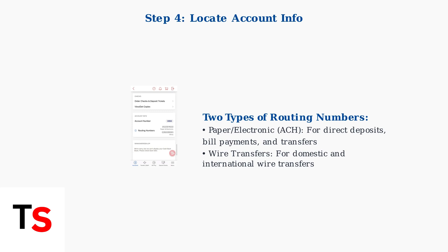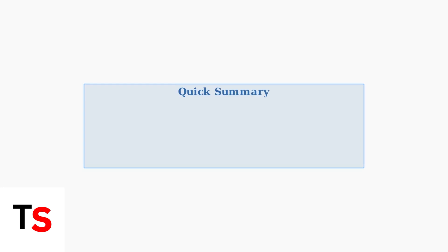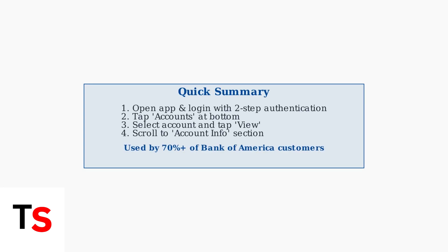Here you'll find both your account number and routing numbers. Notice there are typically two routing numbers listed — one for electronic transfers and ACH transactions, and another specifically for wire transfers. You now have access to both your account number and the appropriate routing number for your transaction type.